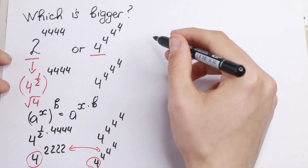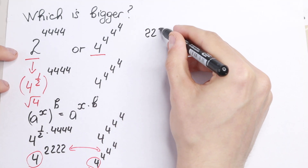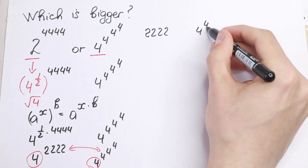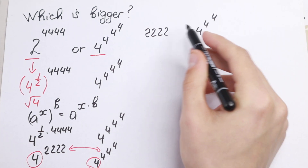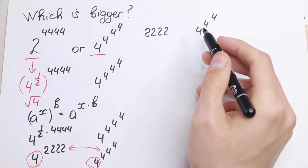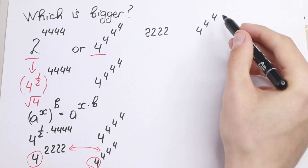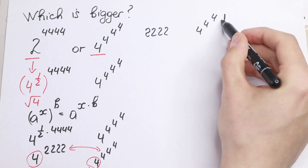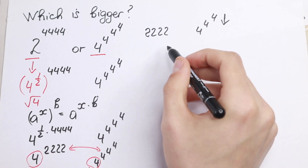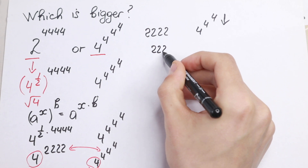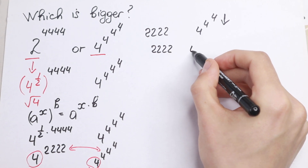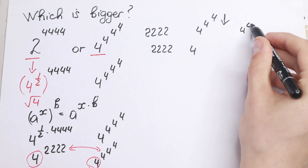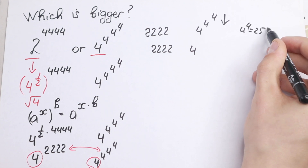On the left hand side we have 2,222 as the exponent. On the right hand side we have 4 to the power 4, to the power 4. We evaluate from the top down, so first we compute 4 to the power 4, which equals 256.